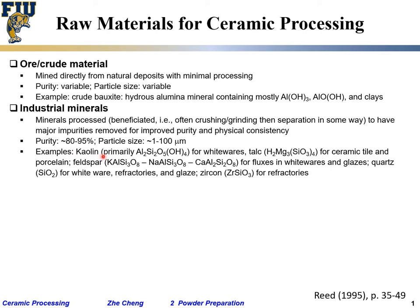Some examples: kaolin, which is essentially used for whiteware — your washing basin, your sit-on toilet. That's kaolin, essentially aluminum silicate hydrate. Talc, for ceramic tile, for the roof, and for other applications — essentially magnesium silicate with high hydration. Feldspar for fluxes in whiteware and glazes, giving a shiny appearance to china ware — that's a complicated composition. Cordierite for whiteware refractory or special optical applications. Zircon for refractory. These are some common examples, but for technical ceramics we don't often use these — they're more for traditional ceramics.